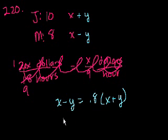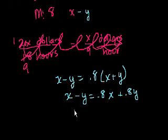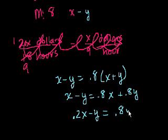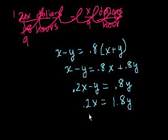So x minus y equals 0.8x plus 0.8y. Subtracting 0.8x from both sides gives 0.2x minus y equals 0.8y. Adding y to both sides gives 0.2x equals 1.8y. Multiplying both sides by 5 gives x equals 9y. That is choice E.